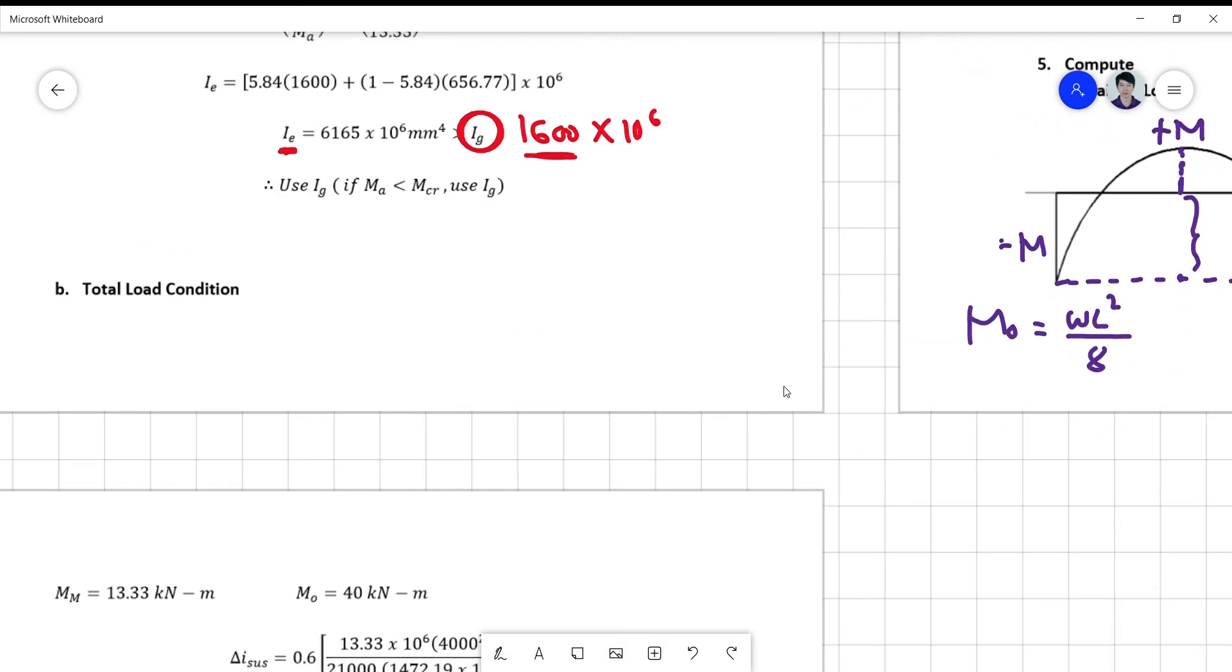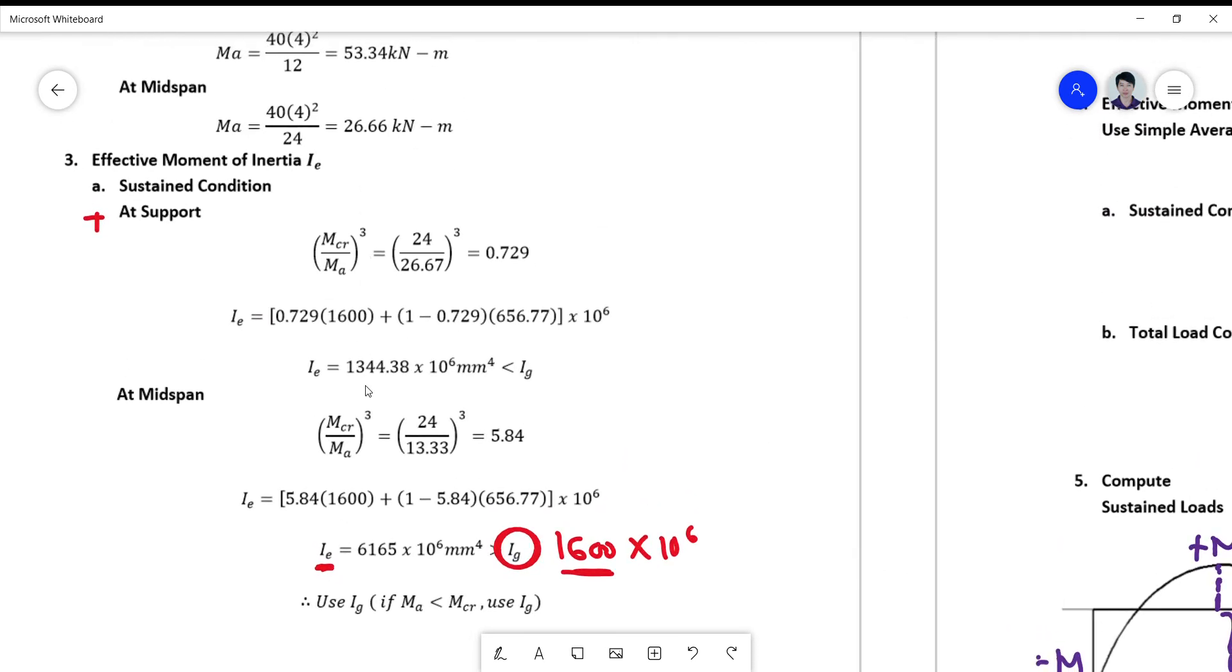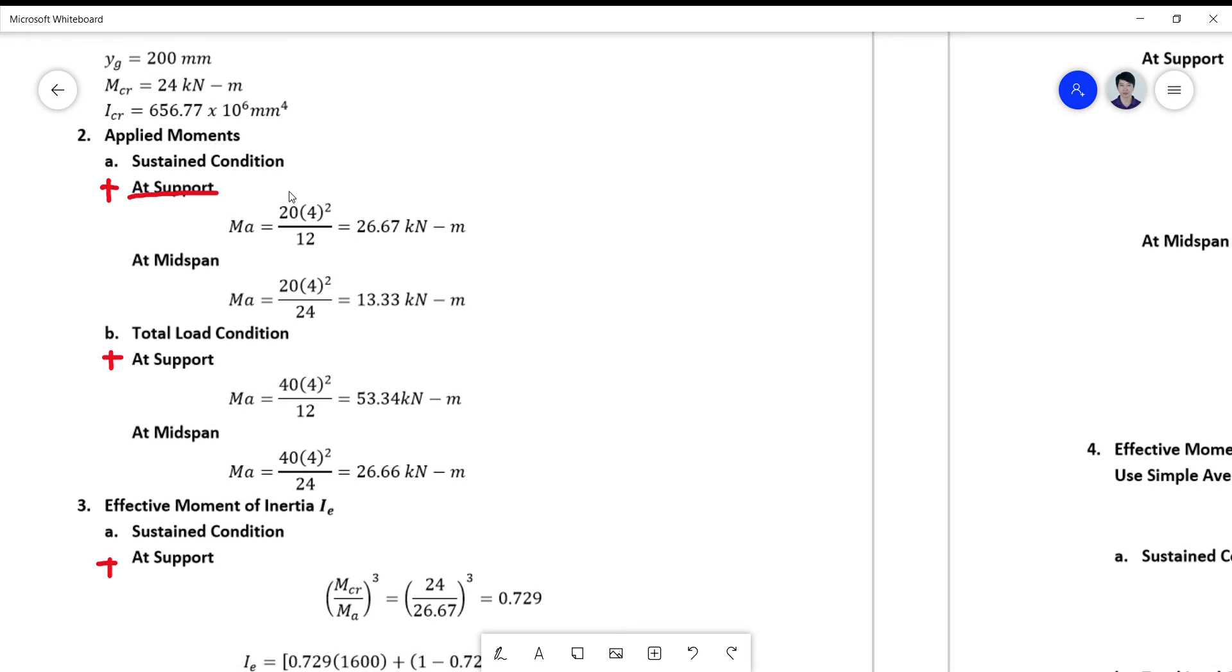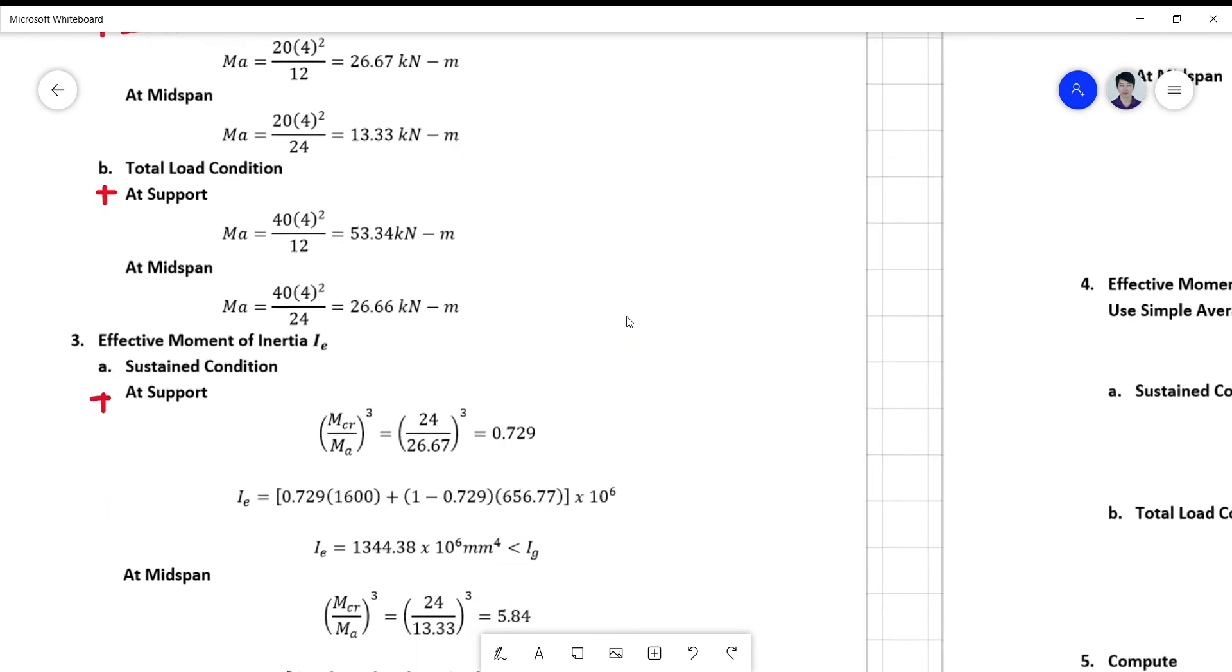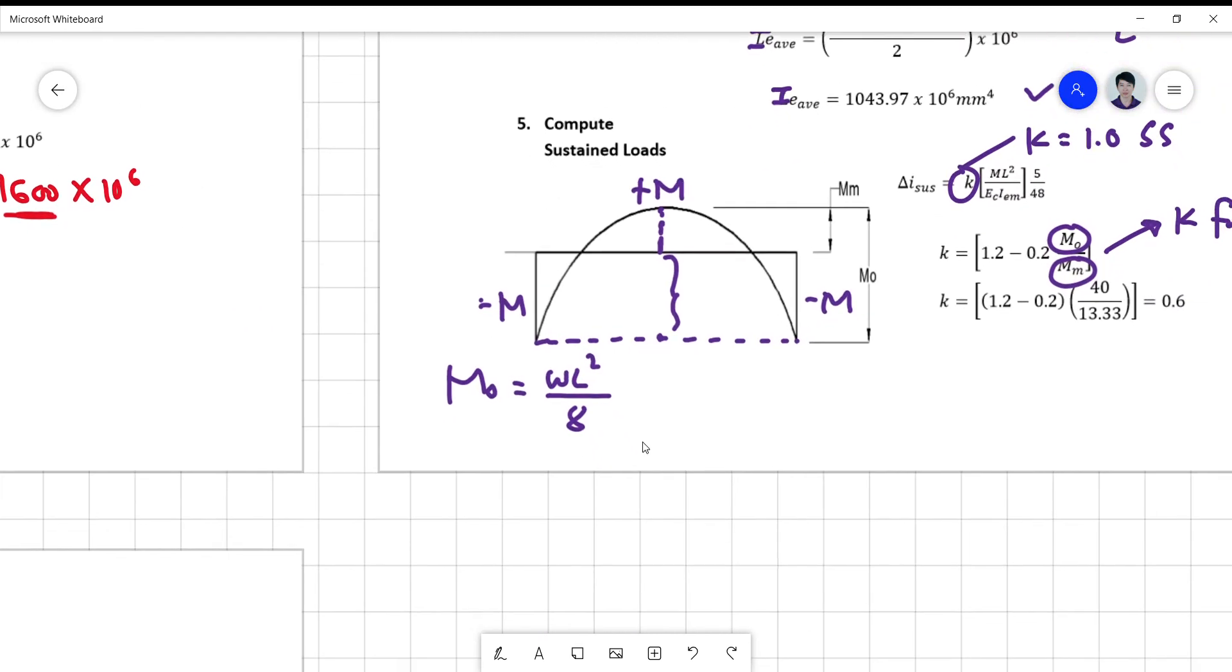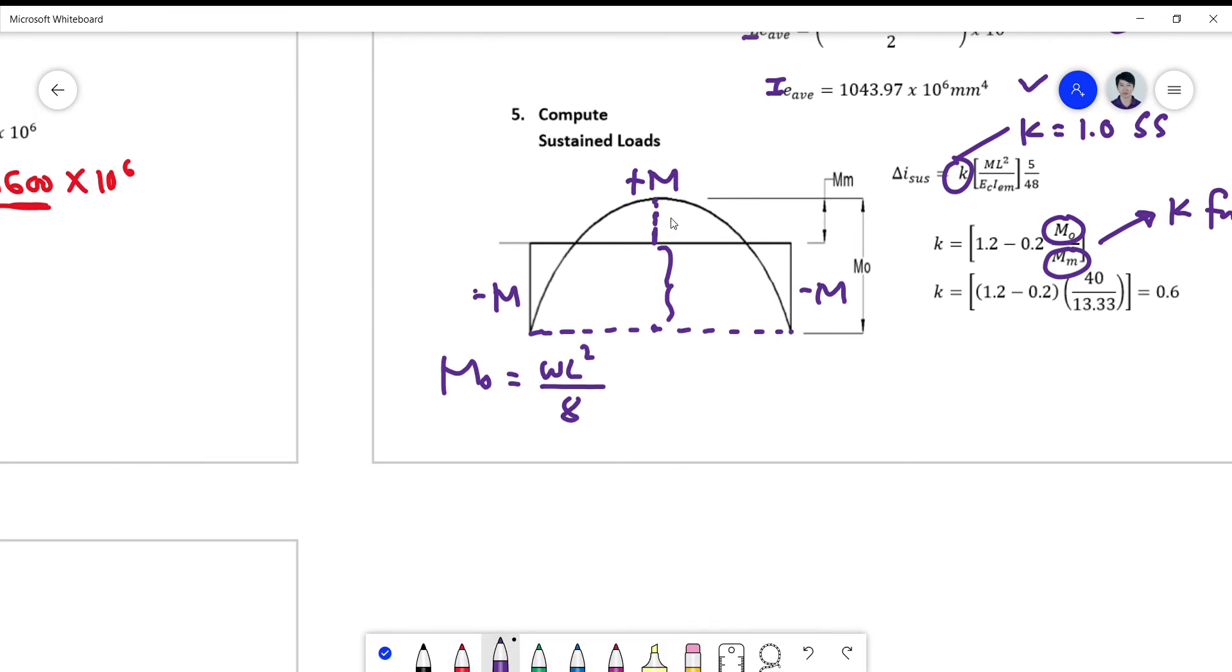So what's your sustained loadings here? For your sustained loading condition, it's 26 and 13.33. So if I add the two, 26 and 13.33, my Mo is equivalent to 40 kilonewton meters.